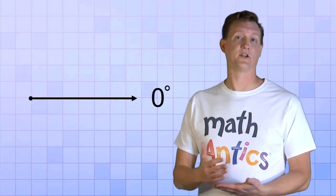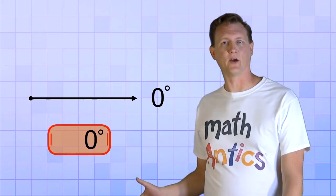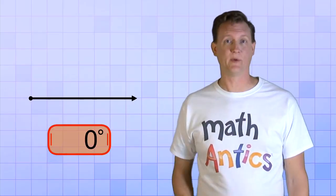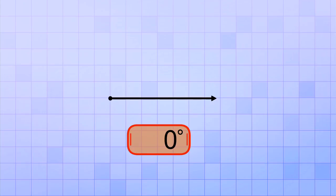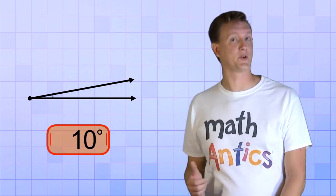Instead, we're going to keep on rotating our top ray and watch the angle get bigger and bigger. This special readout here will tell us how many degrees our angle measures. Now let's start out slow. 1 degree, 2, 3, 4, 5, 6, 7, 8, 9, and 10. Now let's hold it there for a second.